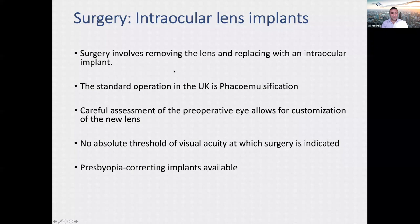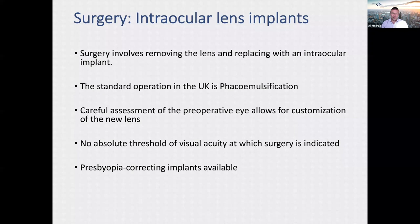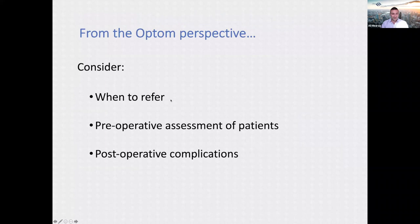Surgery involves removing the lens and replacing it with an intraocular implant. The standard operation in the UK is phacoemulsification. Careful pre-operative assessment allows customisation of the new lens. There is no absolute threshold of visual acuity at which surgery is indicated. CCGs do have thresholds — typically the driving standard — for NHS surgery, but patients can be symptomatic even before that, and presbyopia-correcting implants are also available.